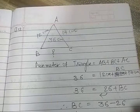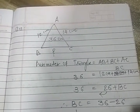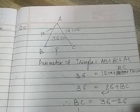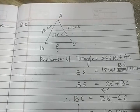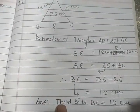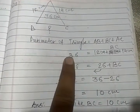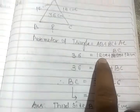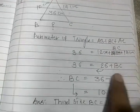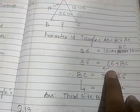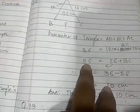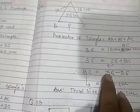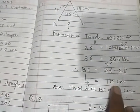First, draw a rough figure of the triangle. Perimeter 36 centimeters is given. Label the vertices A, B, C. Two sides AB and AC are given; we have to find BC. Using the formula: perimeter of triangle equals AB plus BC plus AC. Perimeter is 36, AB equals 12, AC equals 14. So 12 plus 14 equals 26. Therefore BC equals 36 minus 26, which equals 10 centimeters.